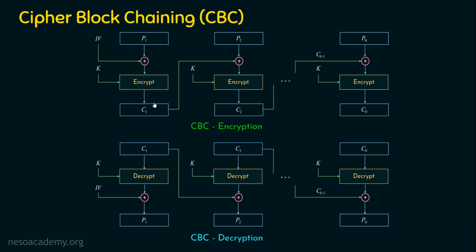Now, what will be the input for generating the first ciphertext block? We are introducing something new here: the initialization vector. For P2, C1 can be given. For P3, C2 can be given. For Pn, Cn-1 can be given. For P1, we are using the initialization vector, which is known to both the sender and the receiver. This initialization vector acts as the input for the first block's encryption.